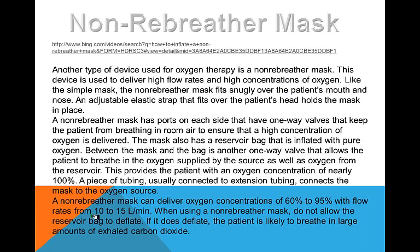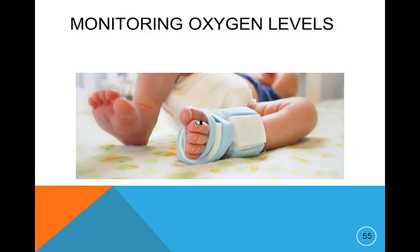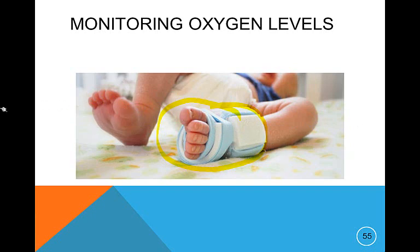The non-rebreather has to be ten to fifteen liters per minute. If you take one of the valves off, it becomes a partial non-rebreather. Your patient should be on a pulse ox, obviously, if they're on oxygen. If they're a pediatric patient, the pulse oximeter has to be changed every shift. If they're a newborn or infant, every four hours. In the NICU, it's changed every two hours because it can cause a burn from the light.